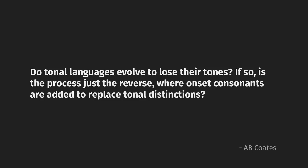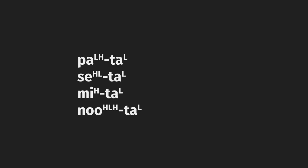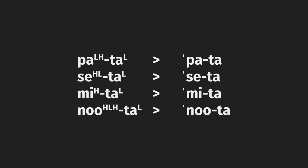Do tonal languages evolve to lose their tones? If so, is the process just the reverse, where onset consonants are added to replace tonal distinctions? Again, I'm sure there's some language somewhere that does this, but the majority of the time we find that tonal exodus occurs via three pathways, the most common of which is the reinterpretation of tone as accent or stress. For example, let's say we have a bunch of words where the roots contain a whole variety of tones and the suffixes are low tones. You could look at this as simply a case of a prominent first syllable and an unprominent second syllable, and you could reanalyze the whole thing, wipe out tonal distinctions and just make it a stress accent sort of thing.